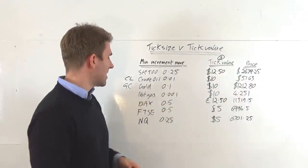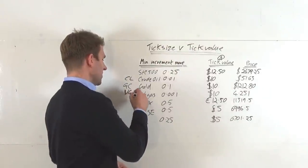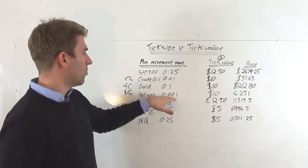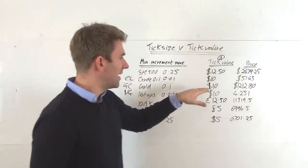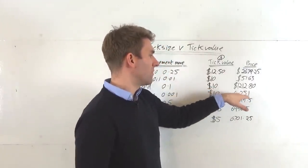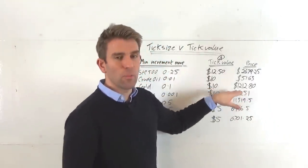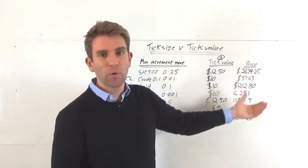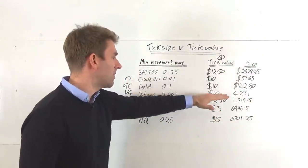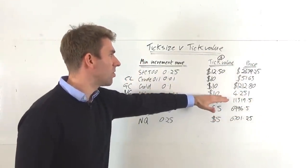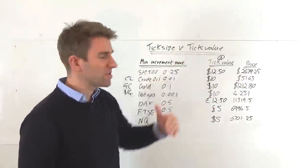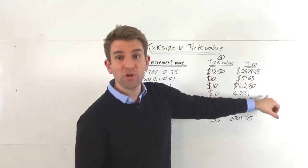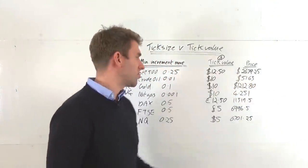Next we've got natural gas — the code is NG, one of the more popular contract sizes for natural gas. The minimum tick is 0.001. The current price is 2.514 — the next price up will be 2.515, and that would be worth $10 per tick, so one contract is $10 up and down. You can see we've got an extra decimal place on that, so watch out — don't get caught out with natural gas.